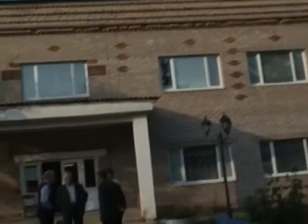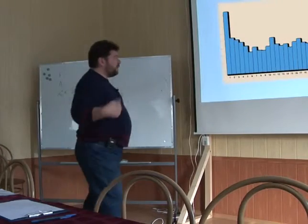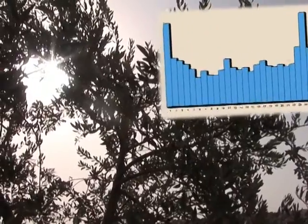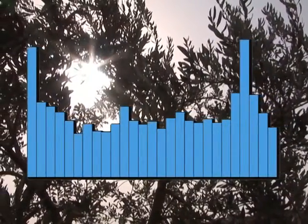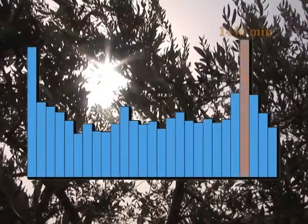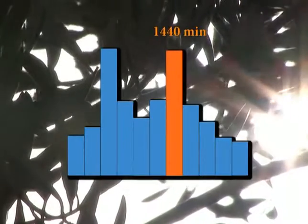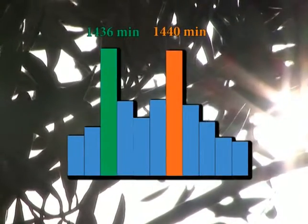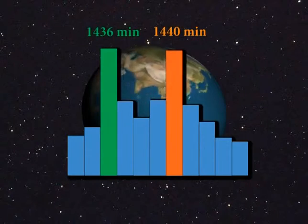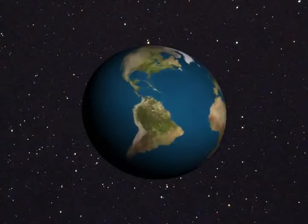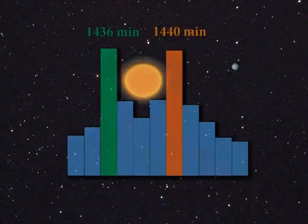One of the first and best-studied results is the daily period, which is revealed using this technique in long series of fluctuation measurements of processes of various natures. The fluctuations of random processes turned out to be similar at time intervals equal precisely to solar days. Moreover, increased measurement precision revealed yet another period of histogram recurrence equal precisely to sidereal days — the time it takes Earth to complete one full rotation relative to the fixed stars.